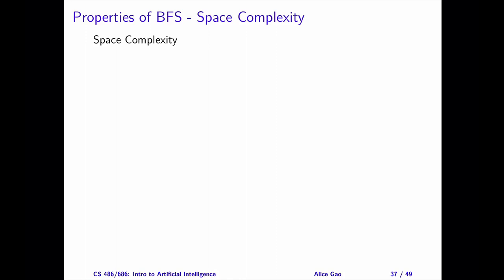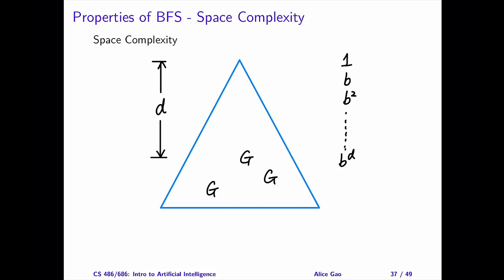Let's look at space complexity. What is the size of the frontier for BFS in the worst case? Since BFS explores the tree level by level, it will terminate at depth D, where D is the depth of the shallowest goal node. The size of the frontier is at most the size of level D. How many nodes are there at depth D?